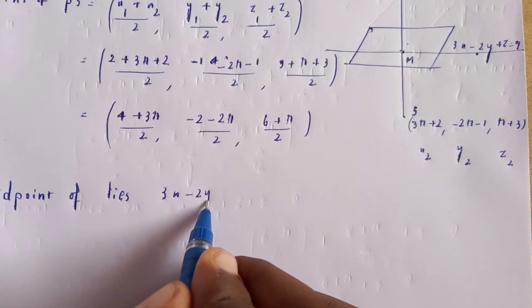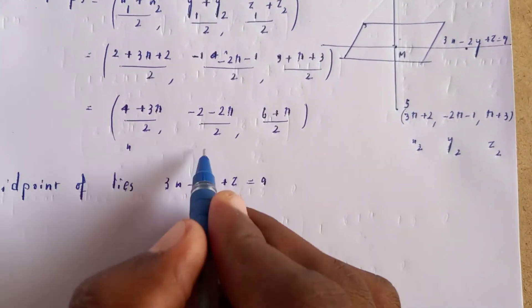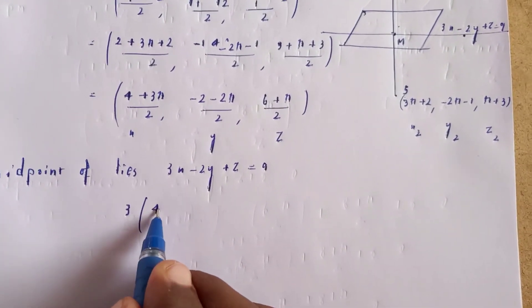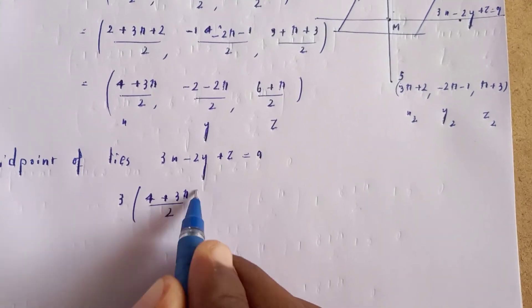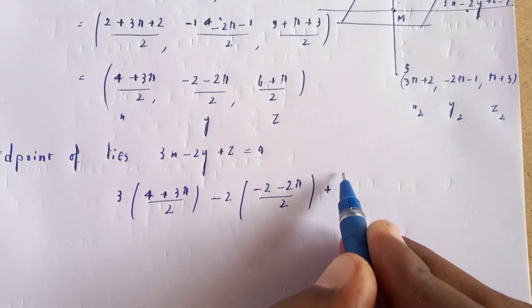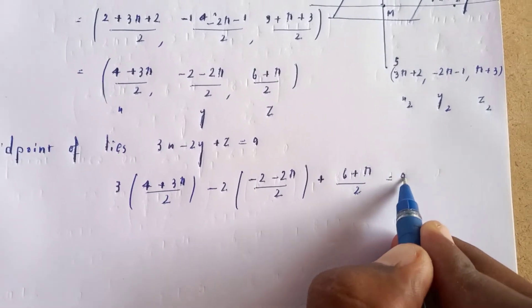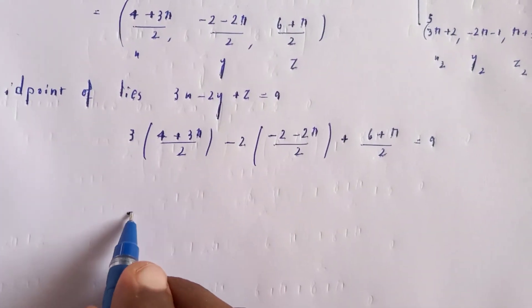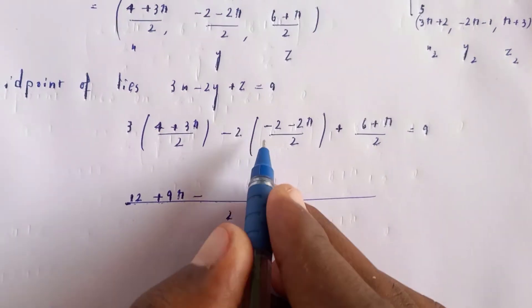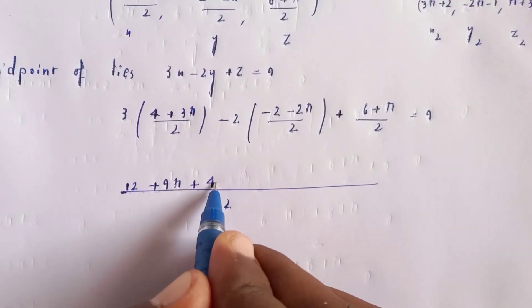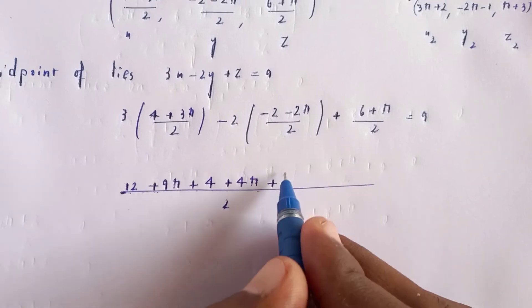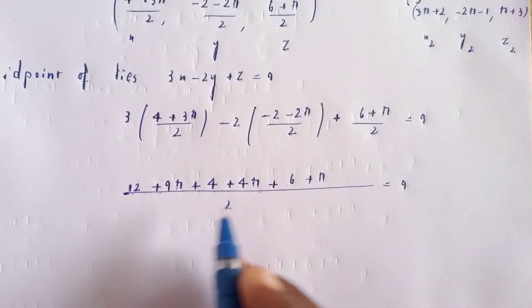Substituting the midpoint into the plane equation: 3((4 + 3r)/2) - 2((-2 - 2r)/2) + (6 + r)/2 = 9. Taking LCM of 2: 3(4 + 3r) + 2(2 + 2r) + (6 + r) = 18. This gives us: 12 + 9r + 4 + 4r + 6 + r = 18.